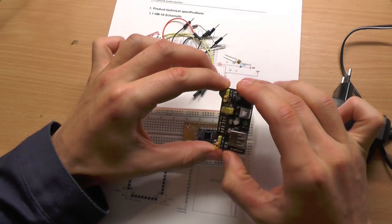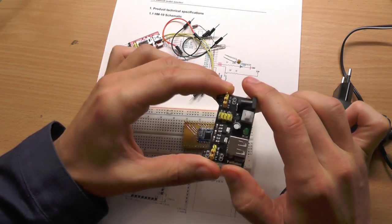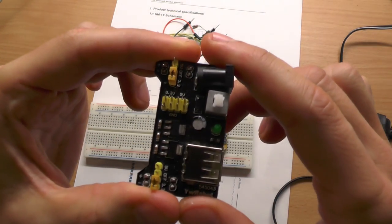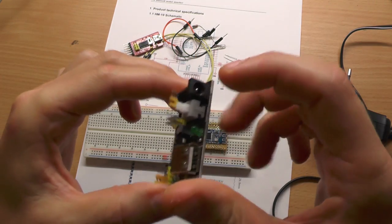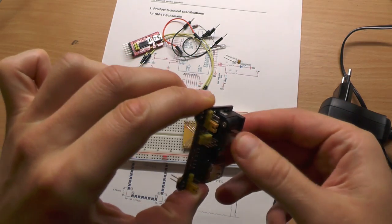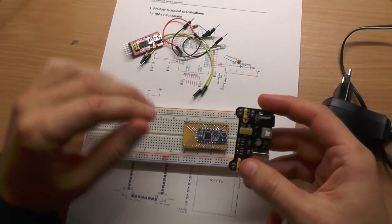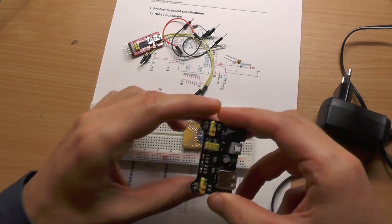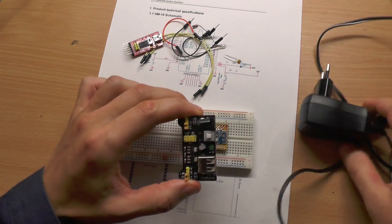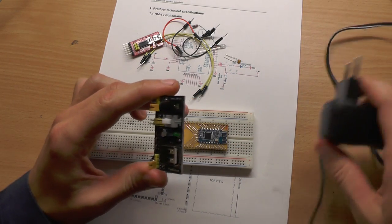We need 3.3 volts. I have here this regulating board, was cheaper from China as well, so you can also use just your bench power supply or coin battery, whatever you like. So just plug in this wall adapter and connect this here.